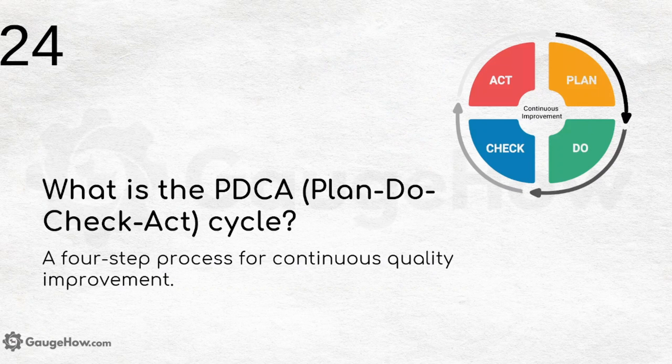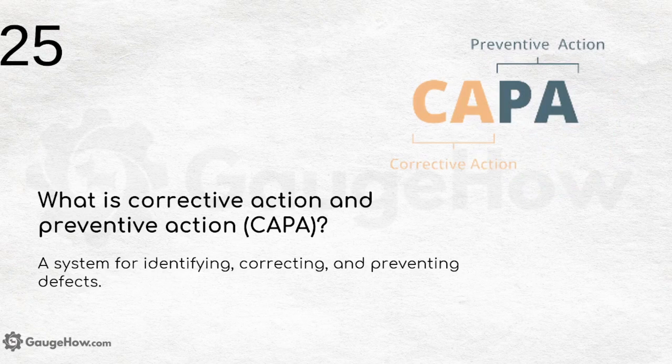What is the PDCA cycle — Plan, Do, Check, Act? It is a four-step process for continuous quality improvement. This cycle is widely used by many multinational companies and manufacturing industries for continuous improvement.